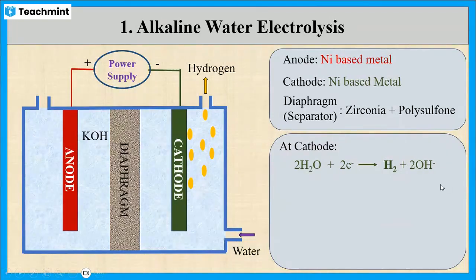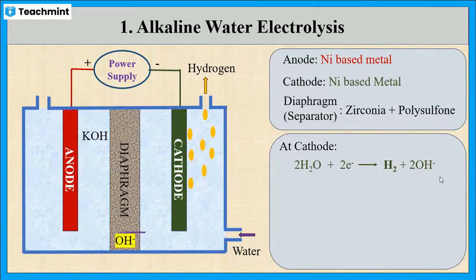These OH⁻ ions, or hydroxyl ions, so generated are able to pass through the diaphragm and enter the anode chamber.